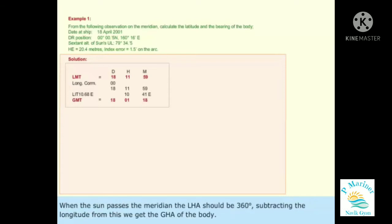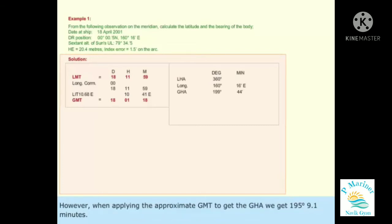When sun passes the meridian, the LHA should be 360 degrees. Subtracting the longitude from this, we get the GHA of the body. However, when applying the approximate GMT to get the GHA, we get 195 degrees, 9.1 minutes.